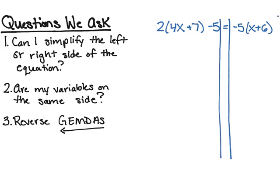The first question I have to ask myself is: can I simplify the left or right side of the equation? Looking at the left side, I can see that I'm going to be multiplying — I'm going to be distributing my 2. So I'm going to say 2 times 4x and 2 times 7, then rewrite my minus 5, because the parentheses closed so I cannot distribute the 2 to the negative 5. So 2 times 4x is 8x, and 2 times 7 is positive 14, then minus 5.